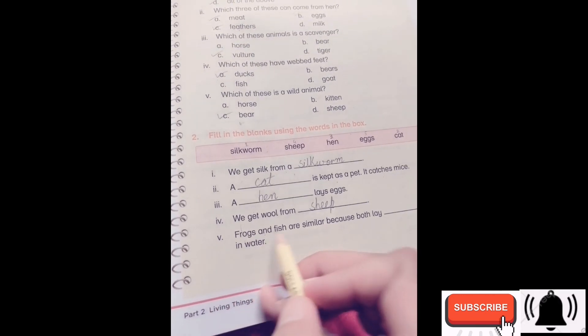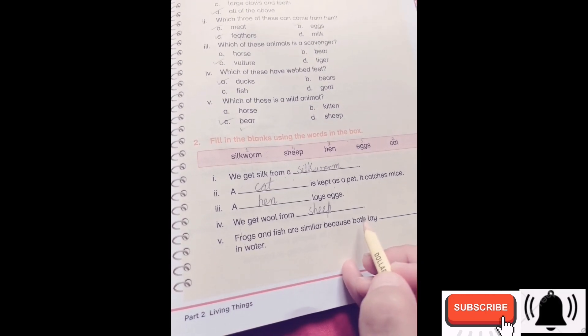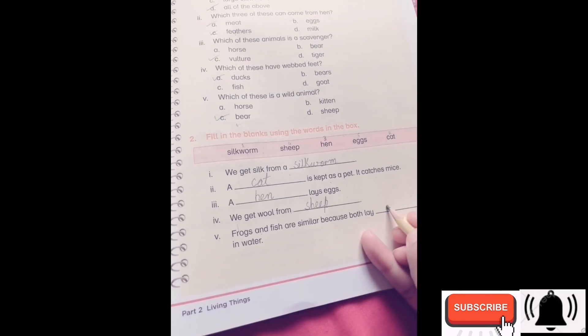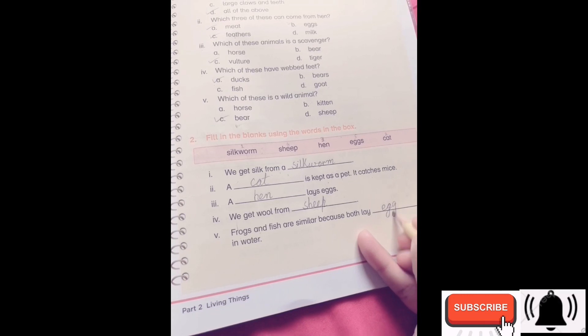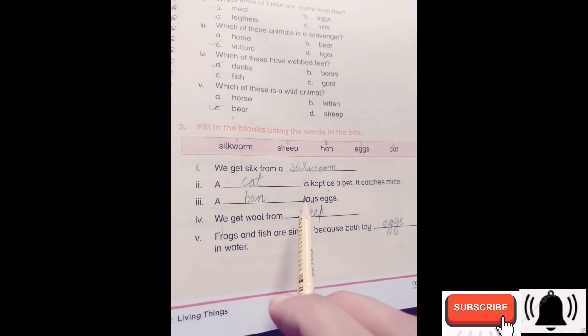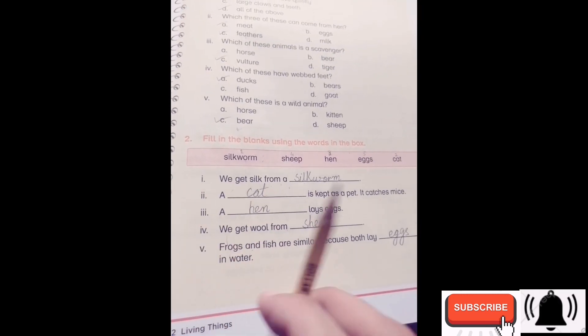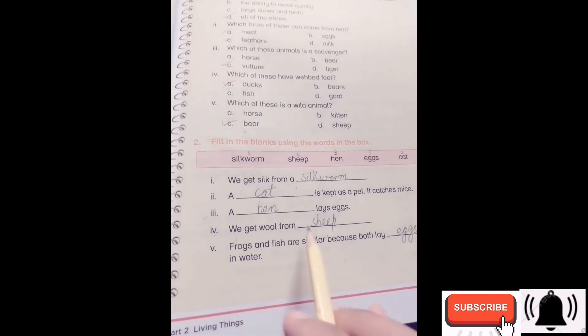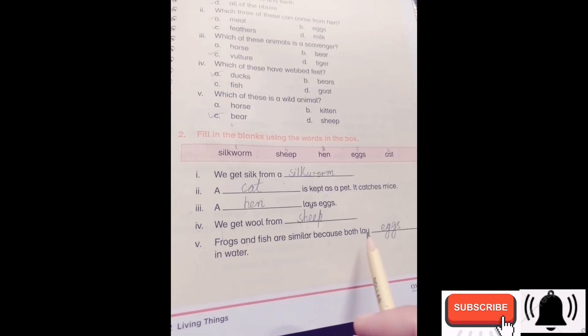Number five, frogs and fish are similar because both lay dash in water. What do they lay in water? Eggs. So the answers are: first one silkworm, second one cat, third one hen, fourth one sheep, and fifth one eggs.